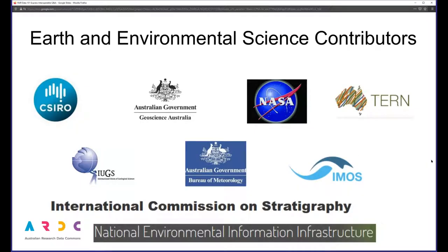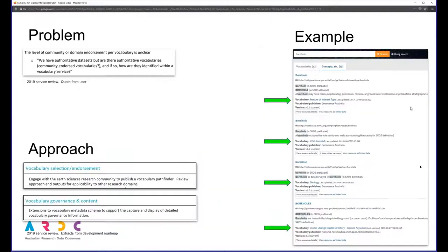I'll talk about this issue in relation to one example research domain: Earth and Environmental Sciences. These are some organisations involved in Earth and Environmental Sciences — a mix of Australian and overseas organisations — and each of these organisations publishes vocabularies in the ARDC Vocabulary Service. As more vocabularies are contributed to the service, users have reported uncertainty in making selections when faced with semantically similar or overlapping vocabularies.